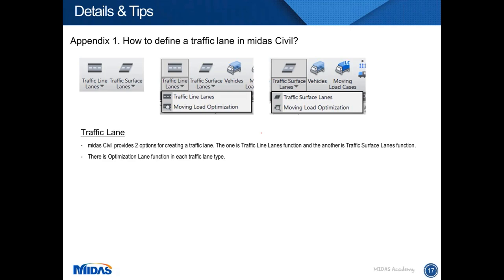We have looked at the procedure for moving load analysis with the PSC box girder bridge. Now we will look into traffic lane and vehicle types in Midas Civil. Midas Civil provides two options — traffic line lane and traffic surface lane — for creating a traffic lane. Traffic line lane is used for frame models such as truss and beam elements. Traffic surface lane is used for planar models such as plate elements. Both types have the moving load optimization function, which is used to check critical results from moving load analysis.